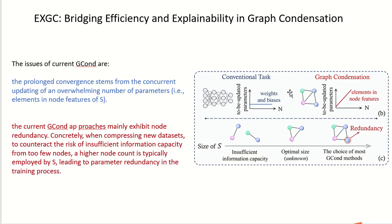However, there are some issues about current Graph Condensation. Number one is the prolonged convergence stemming from the concurrent updating of an overwhelming number of parameters.